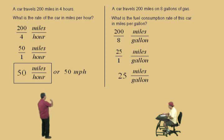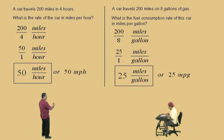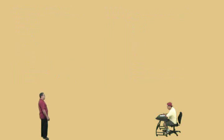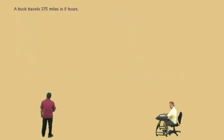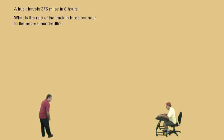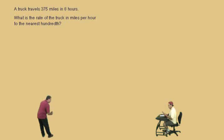So we get 25 miles per 1 gallon. Our answer is 25 miles per gallon, or we can use the abbreviation MPG — 25 miles per gallon, meaning 25 miles per 1 gallon. All right Charlie, let's do another one. A truck travels 375 miles in 8 hours. Read the question carefully, Charlie. What is the rate of the truck in miles per hour?